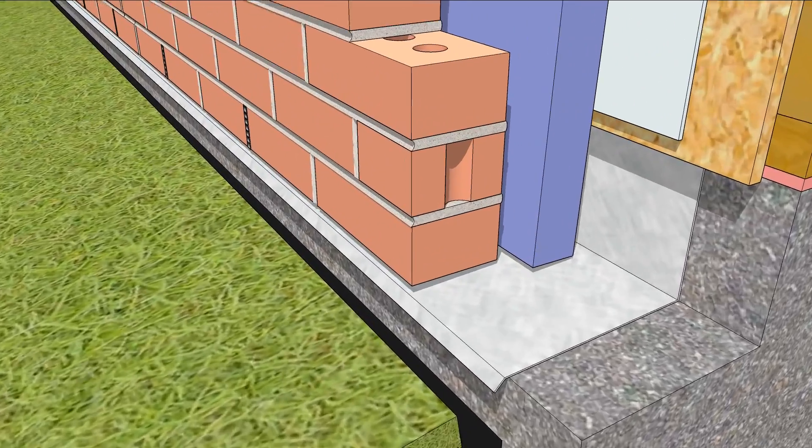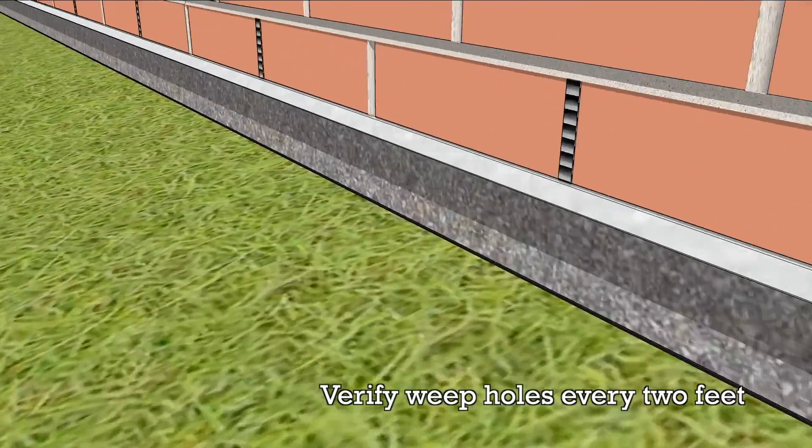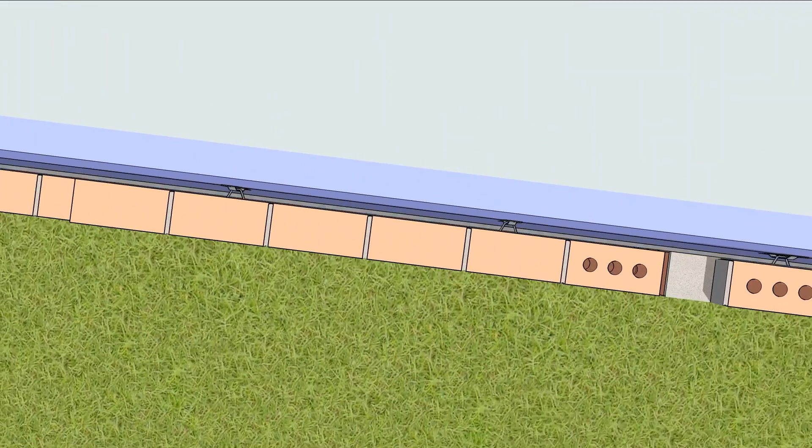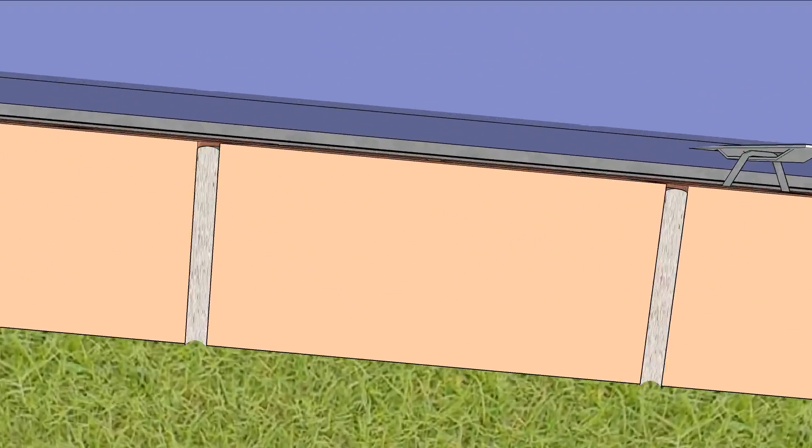As they lay that first course of brick, make sure they add weep holes every couple of feet. Otherwise, water that gets behind the brick won't be able to escape.